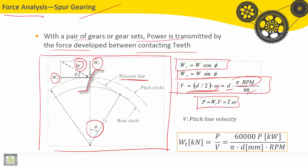We know that the power P in Watt is equal to the force, tangent force, multiplied by the velocity. It is equal also to the torque into the angular velocity. V is called the pitch line velocity.